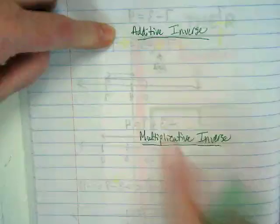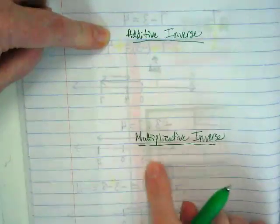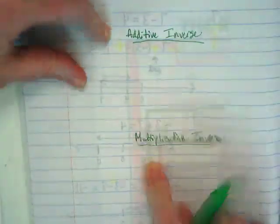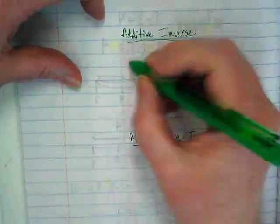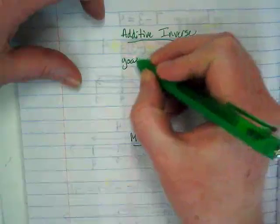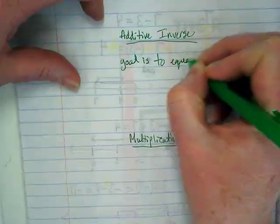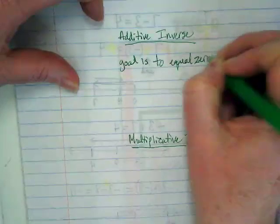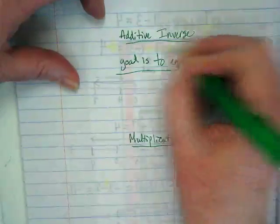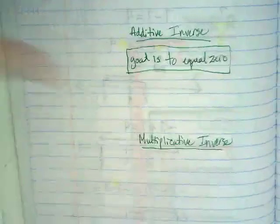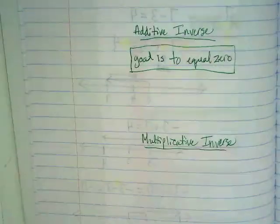The additive inverse and the multiplicative inverse, we're always looking for a specific answer with these. So when I think about the additive inverse, the goal is to equal zero. We're trying to use a number that is the opposite of another number and put them together so we get zero.